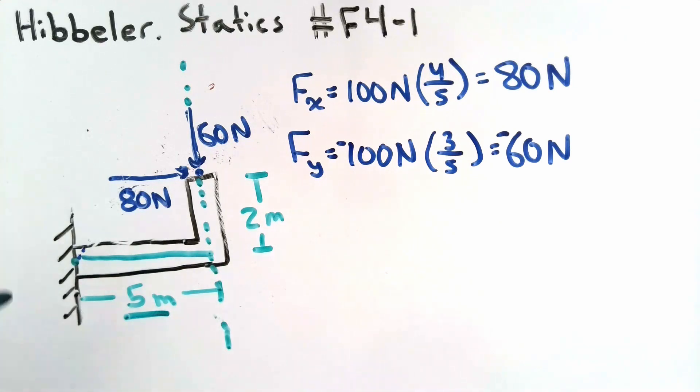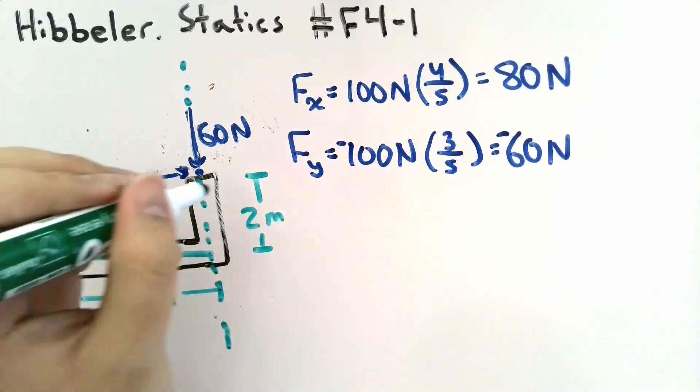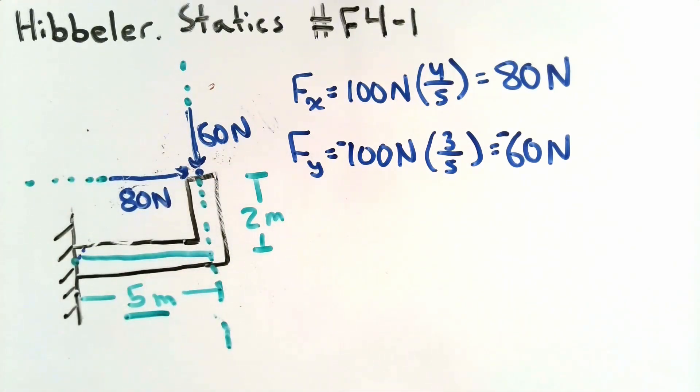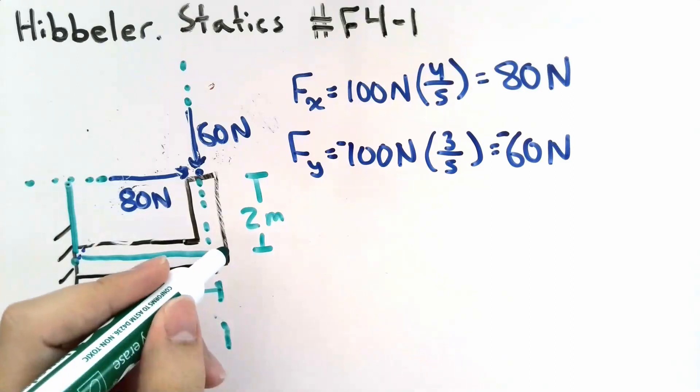We can repeat this process for the X component of the force. If we extend the line of action, we find that the distance between the point and the line of action is simply 2 meters.